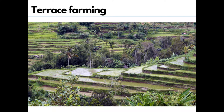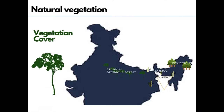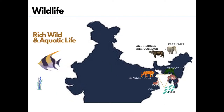The vegetation cover varies across the basin. In plain regions, tropical deciduous forests grow, with commonly seen species like sal, teak, and peepal. Thick bamboo groves are common in the Brahmaputra plains. The delta region is covered with mangrove forest. Coniferous trees like fir, pine, and deodar are seen in the mountains of Uttarakhand, Sikkim, and Arunachal Pradesh. Wildlife is also enormous in the basin.